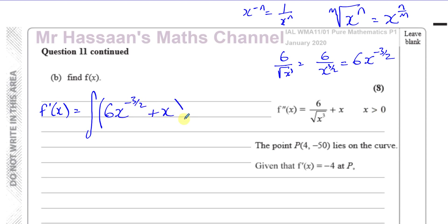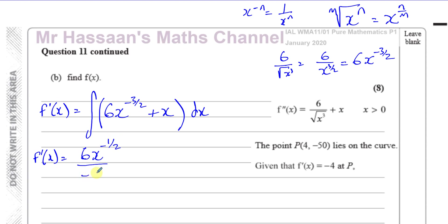Integrating: add 1 to the power of minus 3/2 to get minus 1/2, then divide by the new power minus 1/2. That gives 6 divided by (−1/2) times x^(−1/2), which equals −12x^(−1/2). Plus integrating x gives x²/2. Add constant of integration c. So f dash of x equals −12 over root x, plus (1/2)x², plus c.